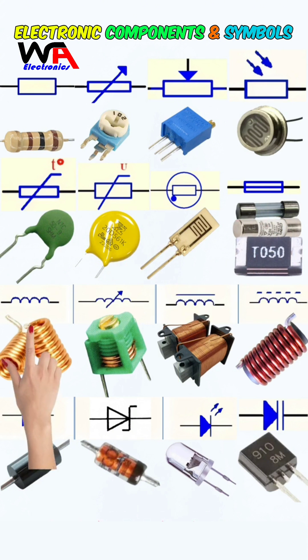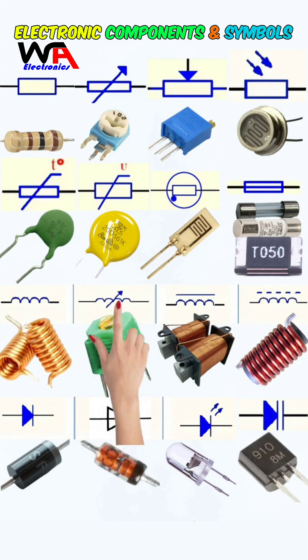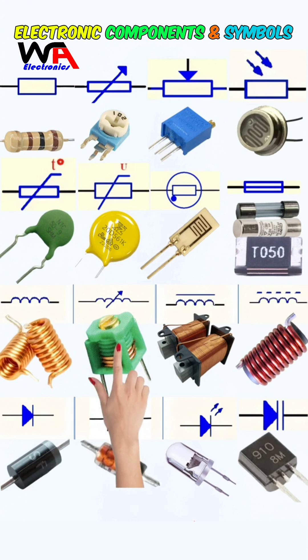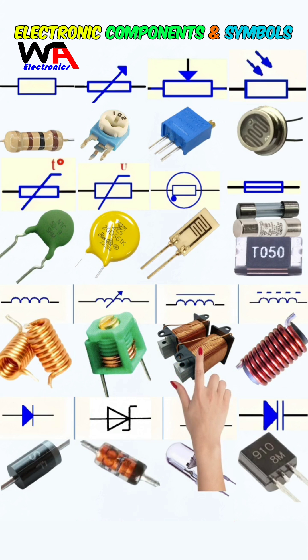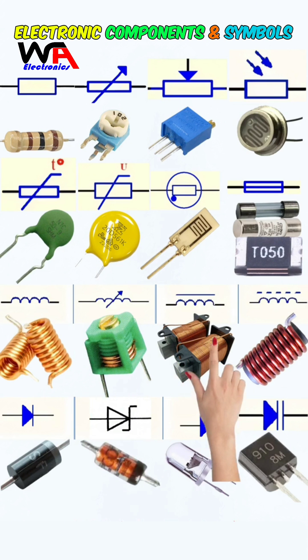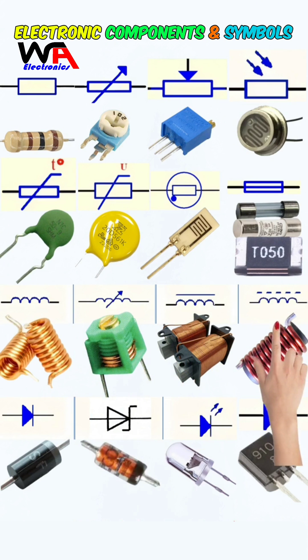This is an inductor, commonly referred to as a coil, and beside it is an adjustable inductor. The one with an iron core is called an iron core inductor, and the one with a dotted line around it is a ferrite core inductor.